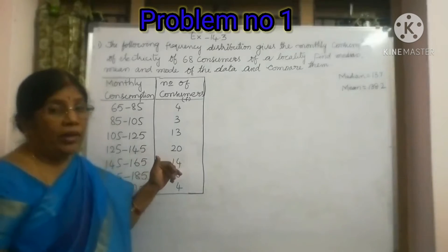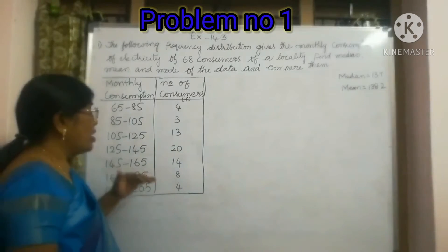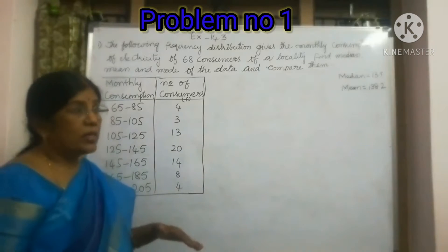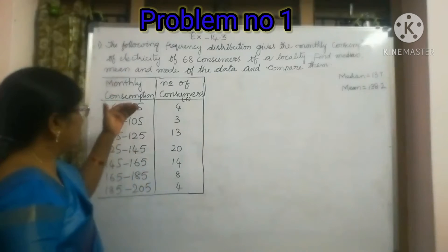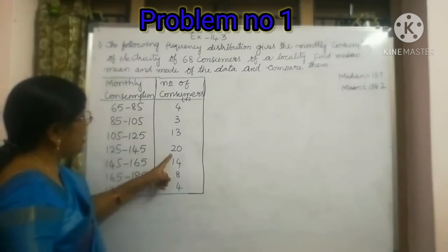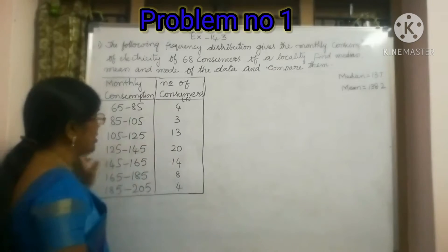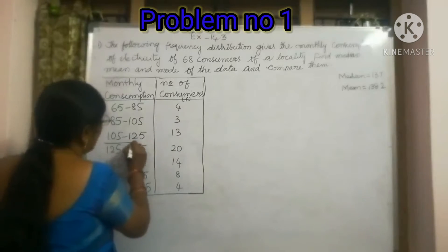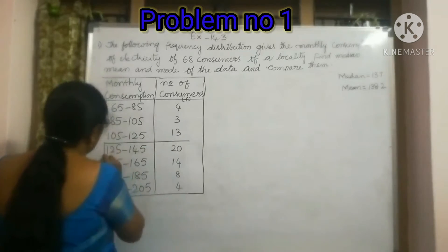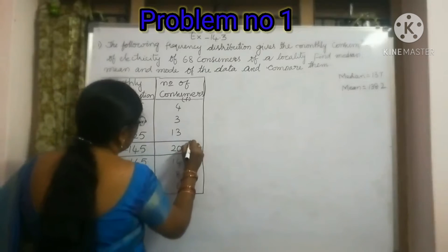We have to find the mode of this data. We know that mode is the most frequently occurred value. Here, if we see this, that value is 20. That is the maximum value of this frequency. This is the modal class. We have to decide this as the modal class.